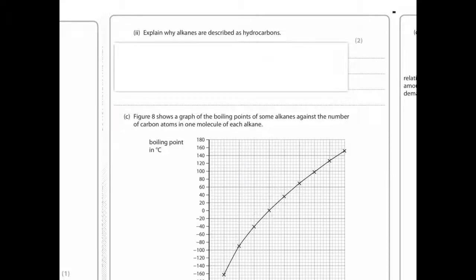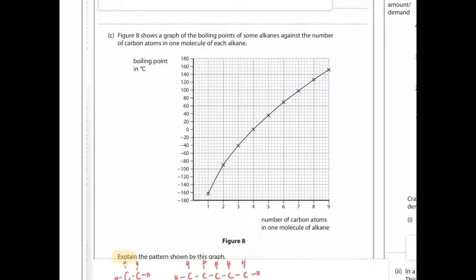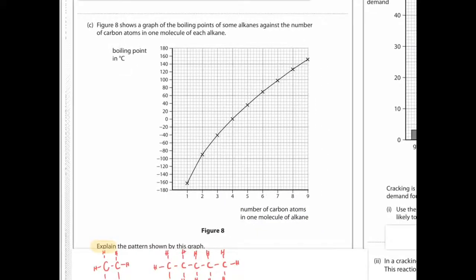Figure eight shows a graph of the boiling points of some alkanes against the number of carbon atoms in one molecule of alkane. So whenever you have a graph, just take time to look at it first before you look at the question. Number of carbon atoms in one molecule. So as you increase, the boiling point increases. It's not a perfectly proportional relationship, but you can see it's more or less a very strong positive trend here.